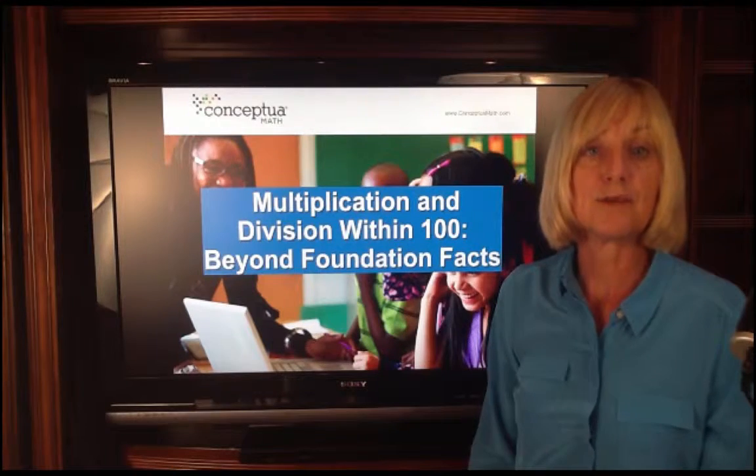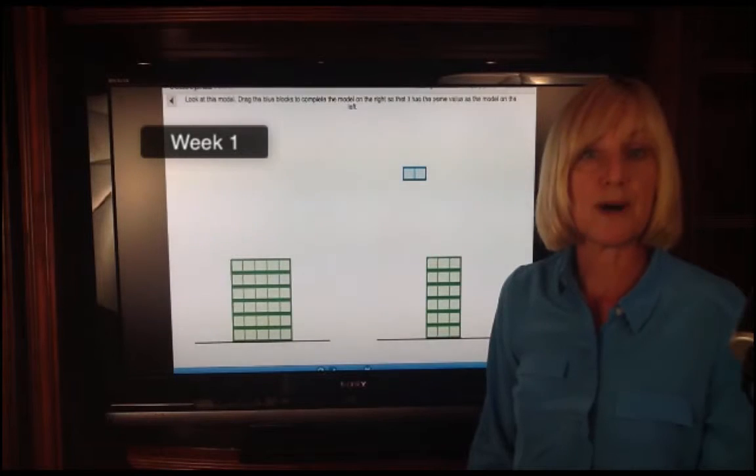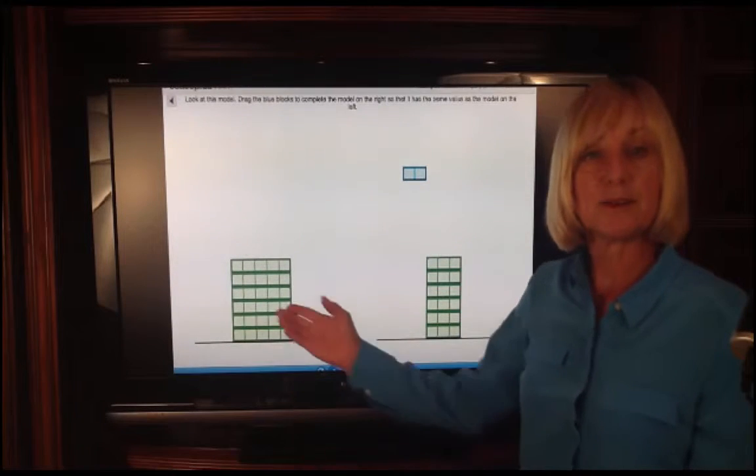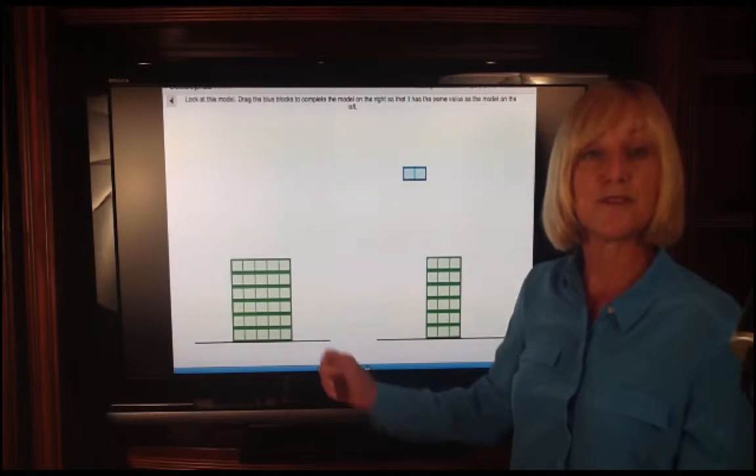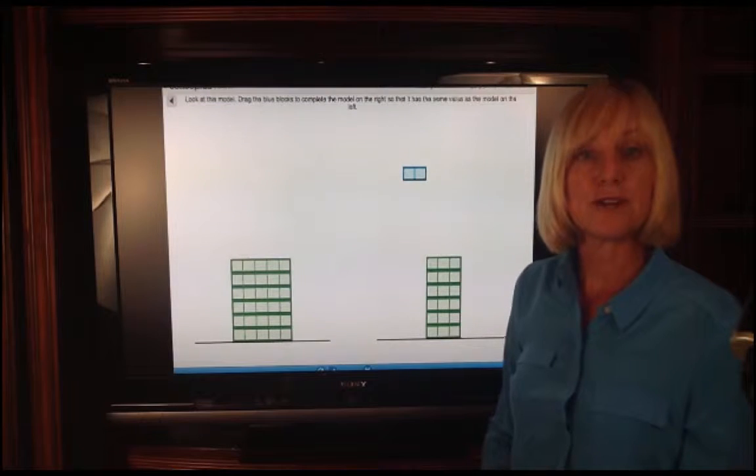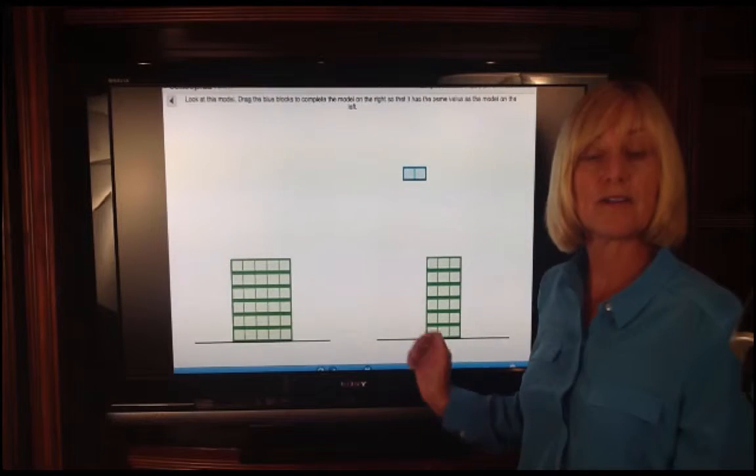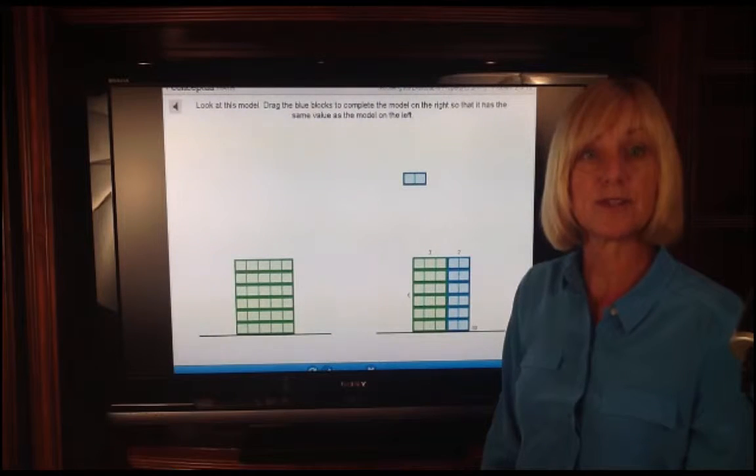Specifically, we do a lot of work with the distributive property. In the very first week, students work with models only, so they are provided with a model of six times five, six rows or six groups with five in each. One part in this model. They learn that if they don't know six times five, they can create a model that has two parts. Here we have six times three, then six times two.